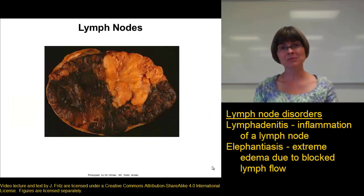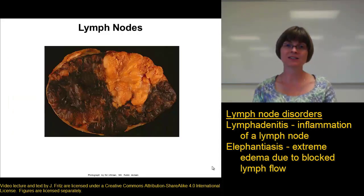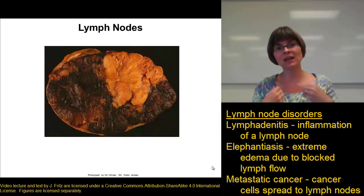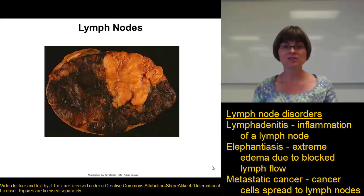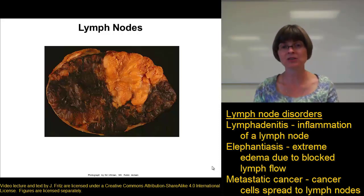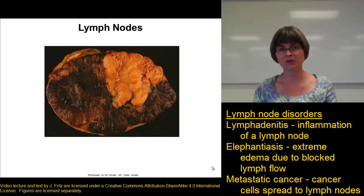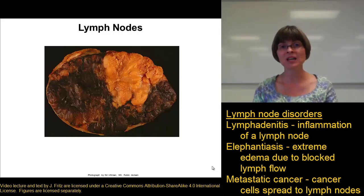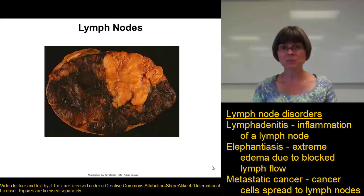Another common problem with lymph nodes is that they also collect cancer cells from other areas of the body. When cancer cells break away from a tumor, they get swept up in the lymphatic system and end up in the lymph nodes. So often when someone has metastatic cancer — cancer spreading to different parts of the body — you find the cancer growing in the lymph nodes. It's very common when removing a tumor to also remove nearby lymph nodes and examine them microscopically for cancer cells. If the cancer has spread, it will most likely end up in the lymph nodes first.